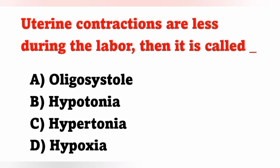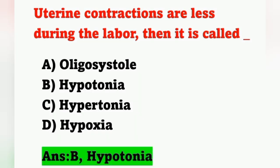The next question: if uterine contractions are less during labor, it is called — options: A: oligosystole, B: hypotonia, C: hypotonia, D: hypoxia. Decreased number of contractions during labor is known as hypotonia. Normally there are three to five contractions in 10 minutes, each lasting 30 to 40 seconds. If contractions are fewer, it is hypotonia; if more than five in 10 minutes, it is hypertonia.